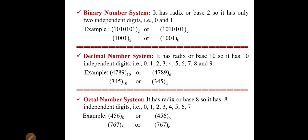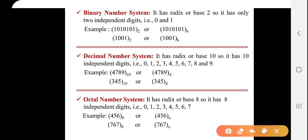Now here, let us start from binary number system. It has radix or base 2, so it has only two independent digits that is 0 or 1. The binary number system can be written as 1010101 or 1001. For representing the number as binary, we need to put base 2 or base b.